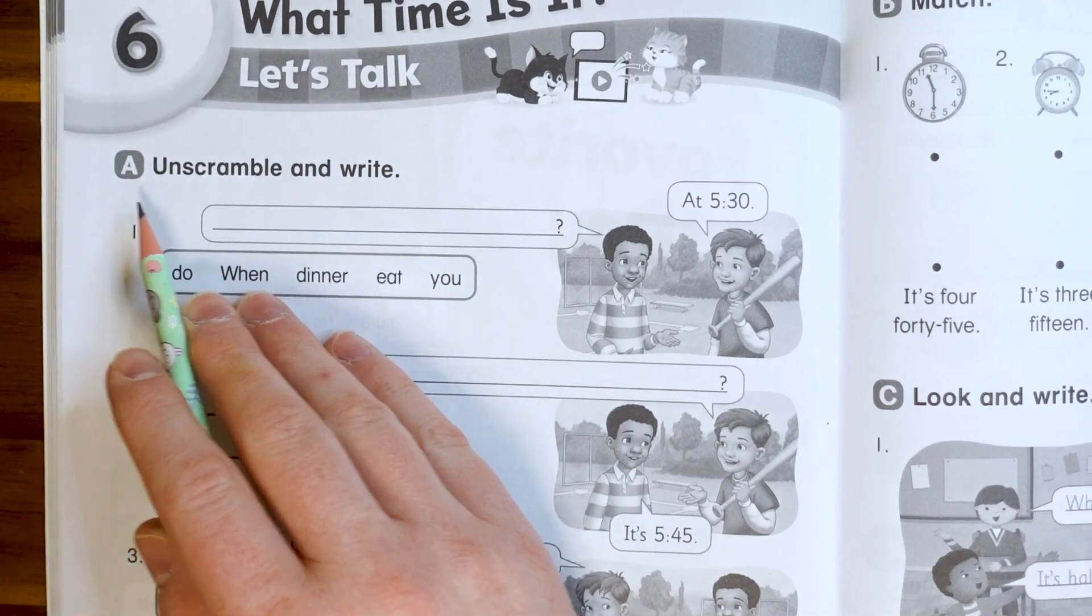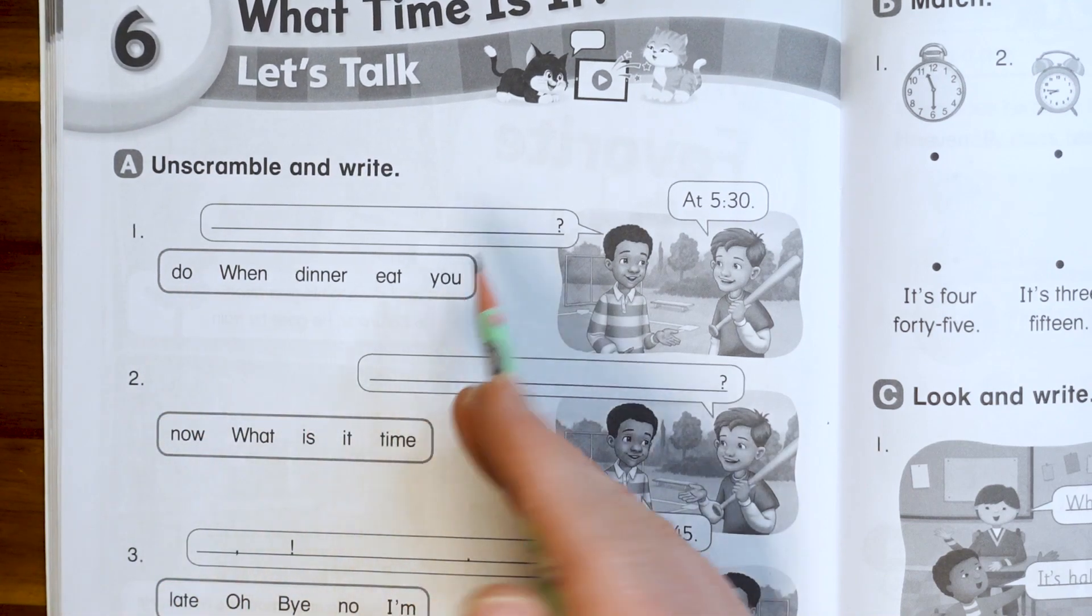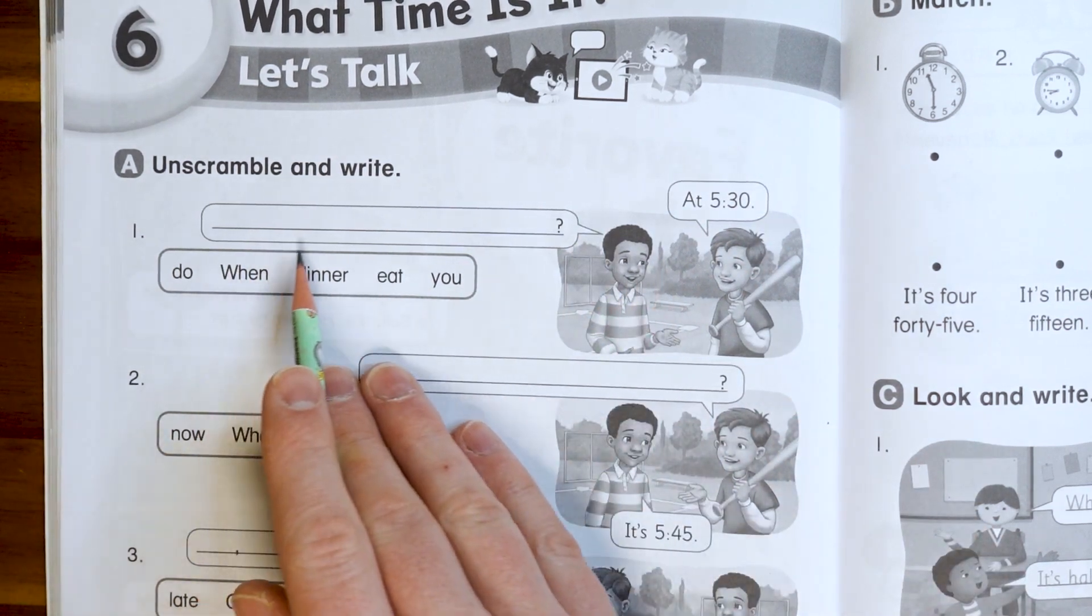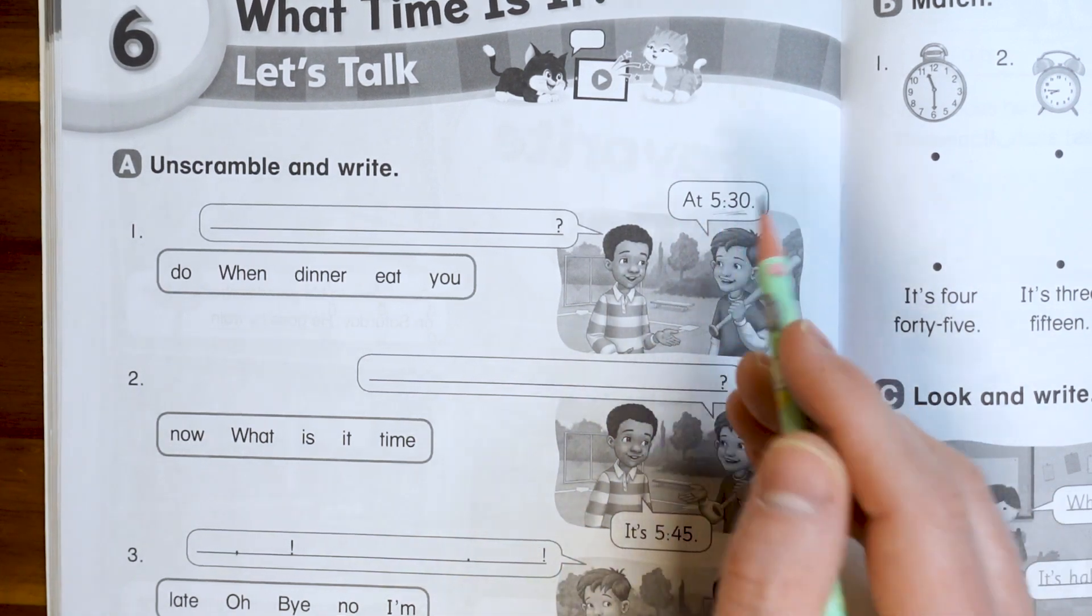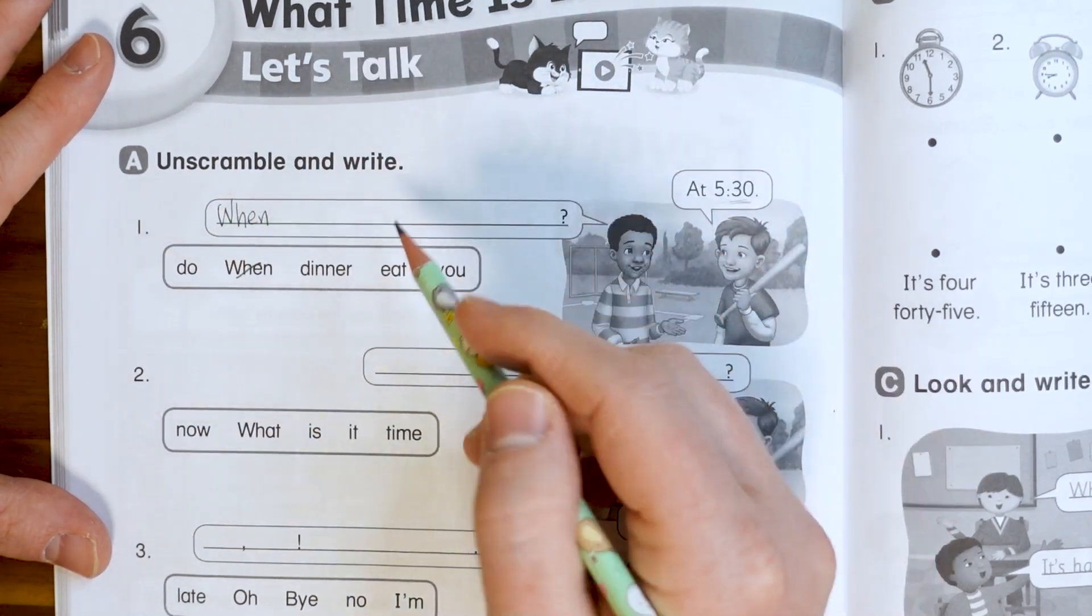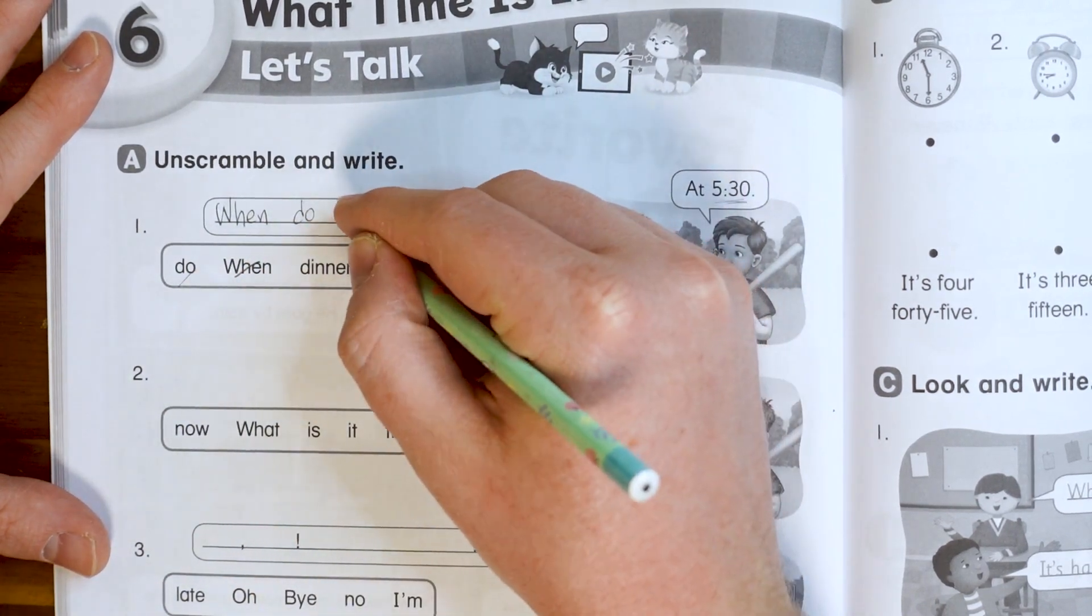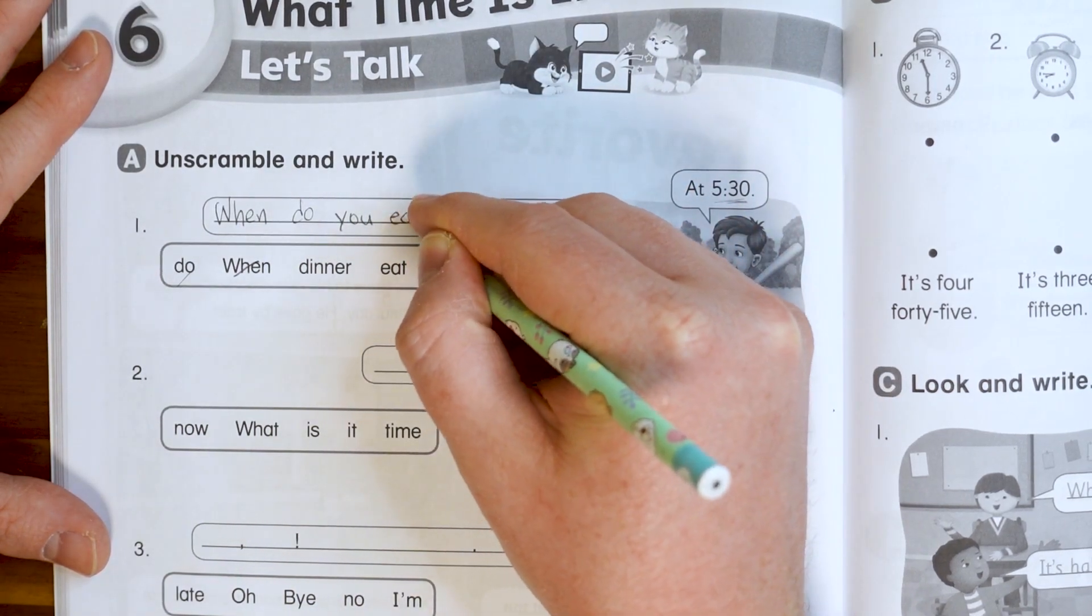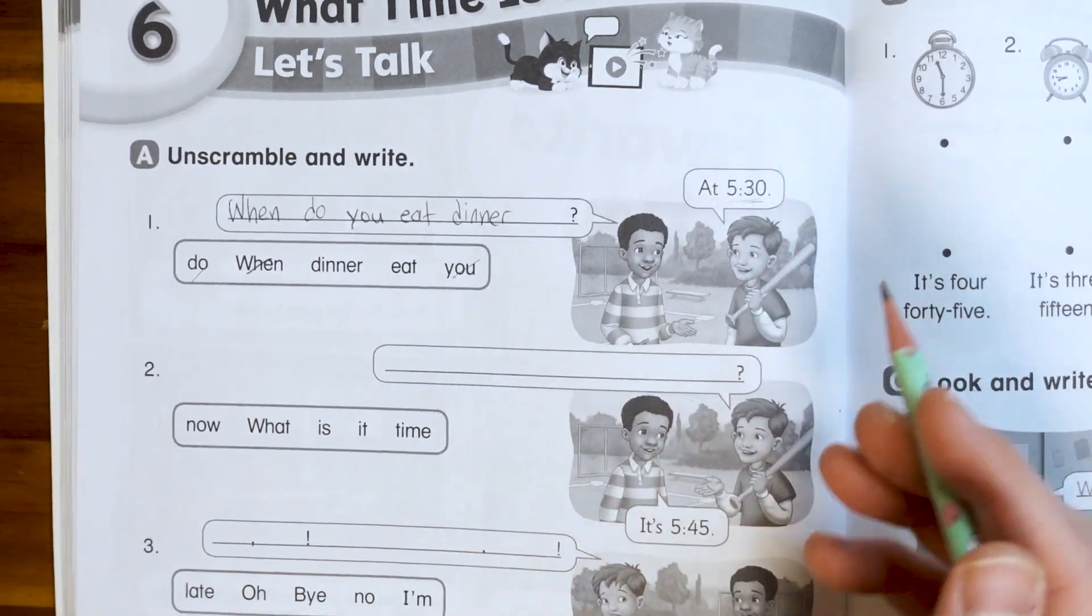And this is part A. Part A just says unscramble and write. So we have all of the words from the questions or the sentences down here, and we just have to put them in the right order. So Andy says, and Scott answers at 5:30. So I know this is a time, so I'm going to put when first. When do you what? When do you eat dinner? At 5:30. Okay, next one.